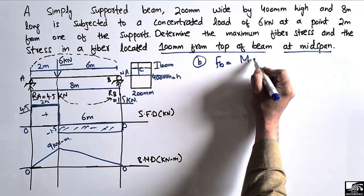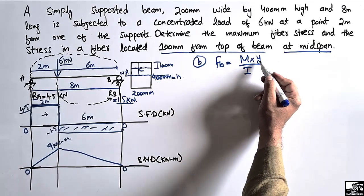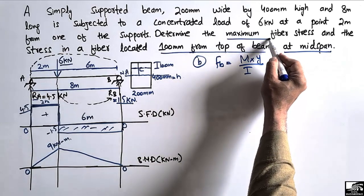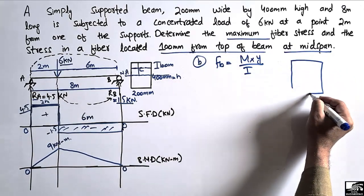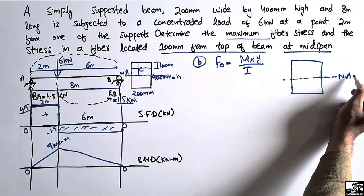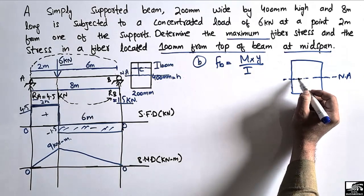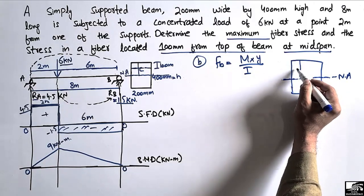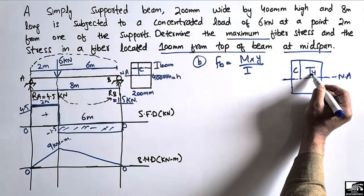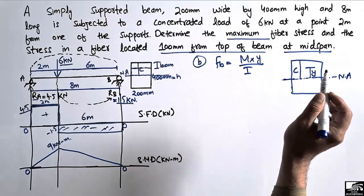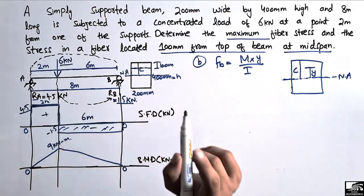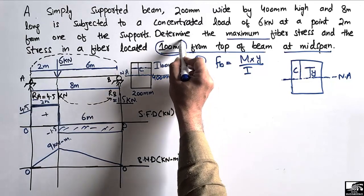The stress at mid span is given by σ = M·y / I. Here y is used instead of c because c represents the distance from the neutral axis to the extreme fiber for maximum stresses, while y represents the distance from the neutral axis to any point. Since we are finding stress at a specific fiber, we use y.